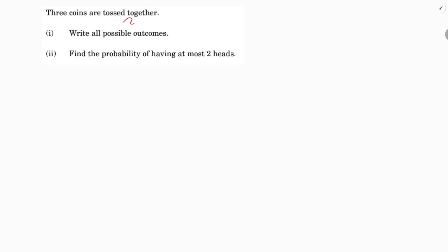Three coins are tossed together. Write all possible outcomes. When three coins are tossed, outcomes can be like head-head-head, head-tail-head, and so on. We need to write all possible outcomes.